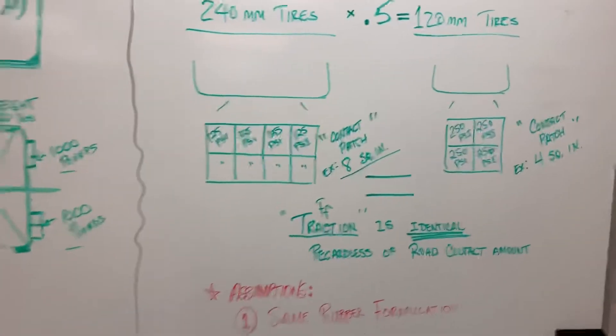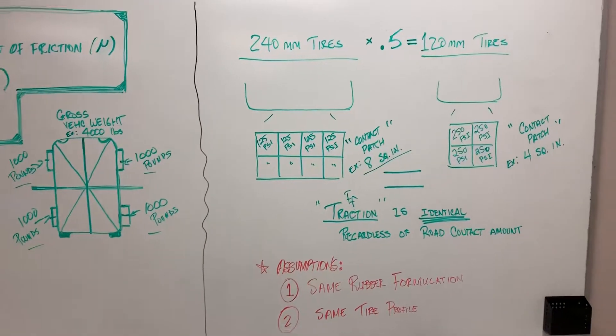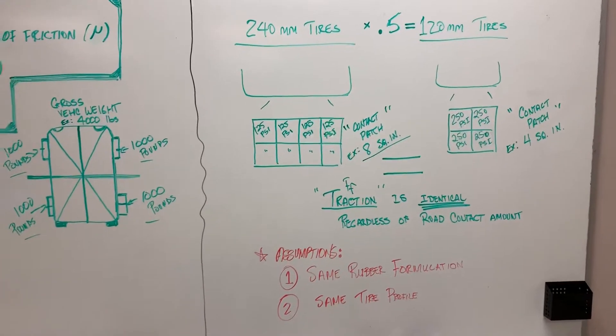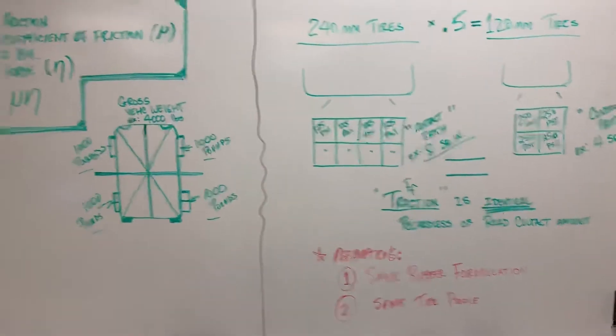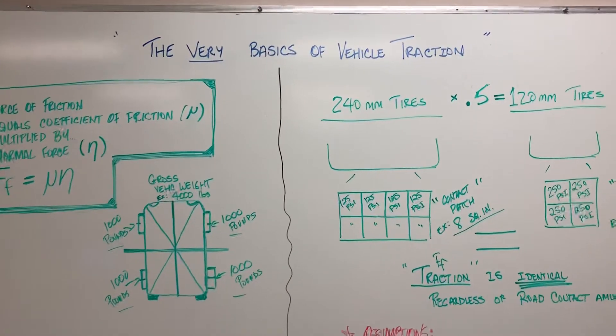Why do we have wider tires? One reason and one reason only: dissipate heat. And when you really want to talk about it, which tire heats up faster and sticks harder, sticks quicker? The smaller one. Because that's the nature of friction.